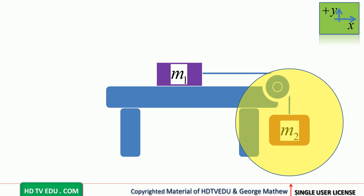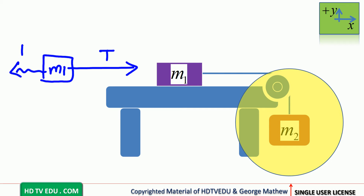Isolating mass m1: tension acts to the right, and the force of friction acts to the left because the object is displaced to the right and friction opposes motion. Normal force acts vertically up, and the gravitational force m1g acts vertically down.